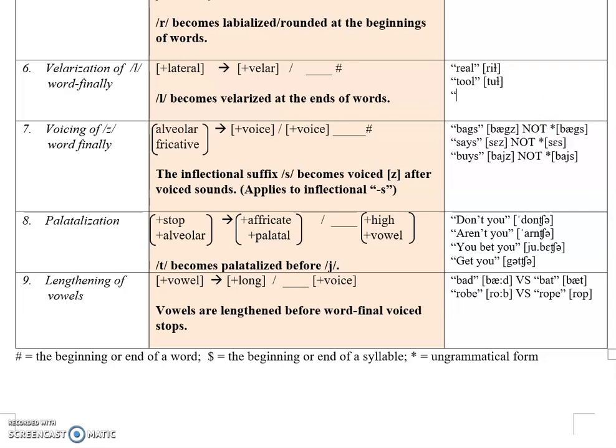Say the word 'lip' and notice the position of your tongue — you can feel the tip of your tongue pushing towards the front of the mouth, touching that alveolar ridge. Now contrast that with the /l/ in 'real' — the root of your tongue, the back of your tongue, moves back a little bit. To indicate it is velarized there is a tilde right in the middle of the 'l' symbol. The same applies to 'tool' — not 'tool' with the tongue pushed all the way forward — that sounds weird. That velarization is what's happening.